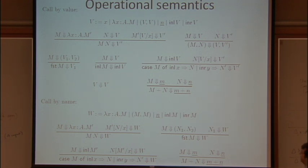In call by name, on the other hand, we don't do that. If we have an application in call by name, then if m evaluates to lambda x.n-primed, then we just go straight ahead and substitute n, the argument unevaluated, for x into n-primed.